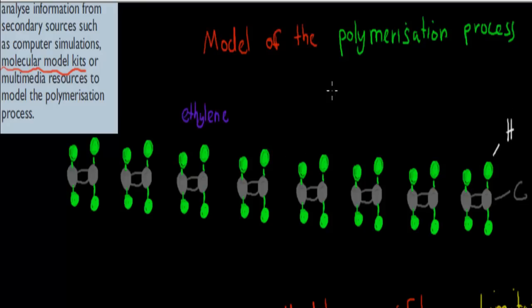And to model the polymerization process, remember these are all monomers, so each one of these is a monomer. And to model polymerization we have to make sure we can actually attach them end to end. So what we do is we break these double bonds. We break them.